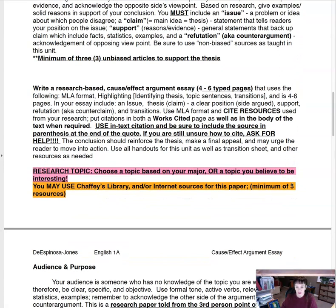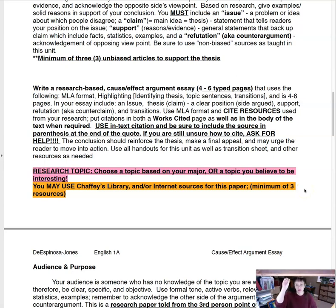Write a research-based cause and effect argument that is four to six pages. The works cited page is not page four — page four is writing all the way to the bottom, and page five would be your works cited page. Use MLA format: on the left side include your name, professor's name, name of the class, and the date with the month written out. In the upper right-hand corner, one half inch from the top, place your last name and page number in the header so it automatically populates on subsequent pages. If you don't remember how to set up MLA format, there's a template and video back in week one.